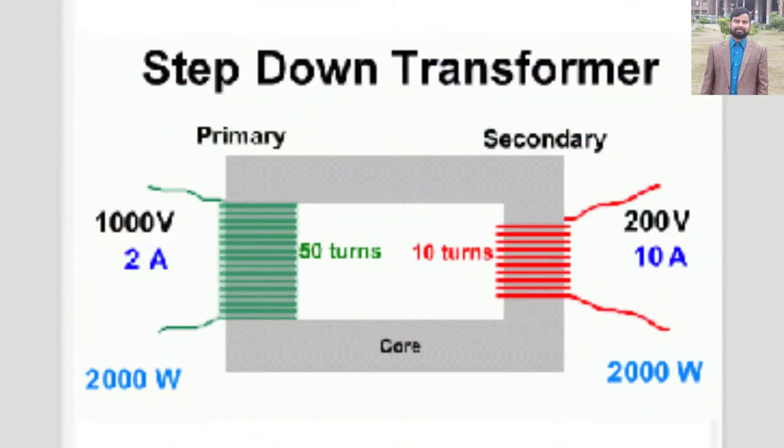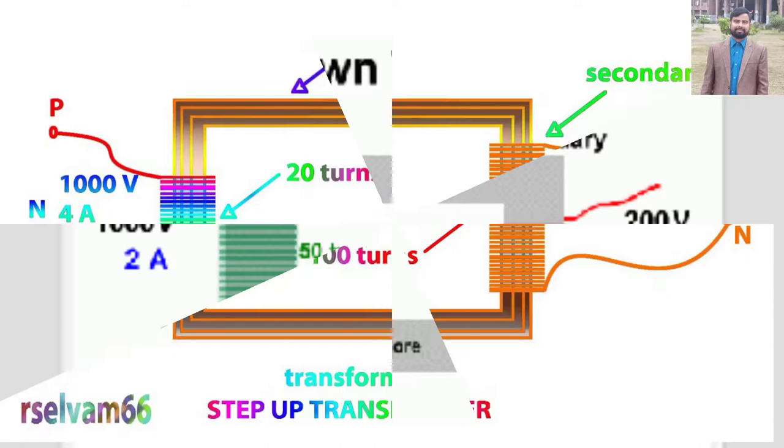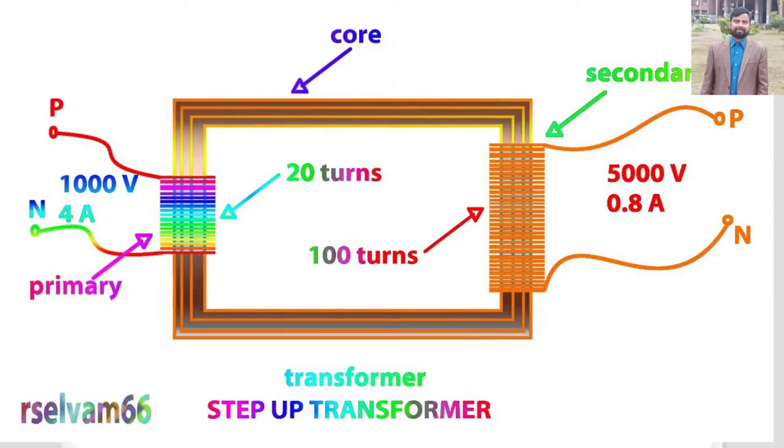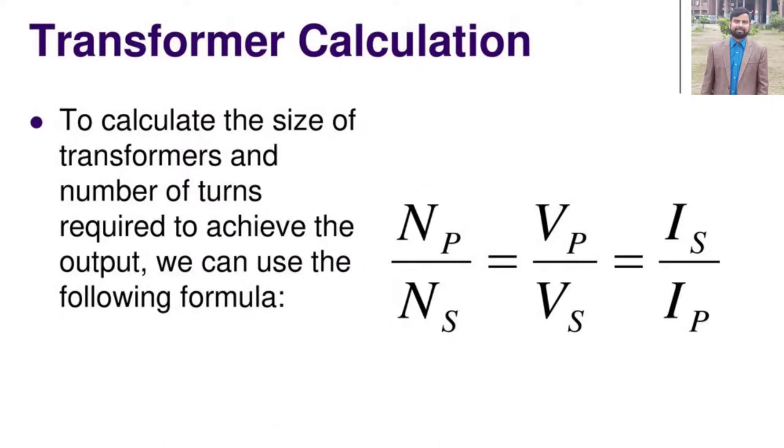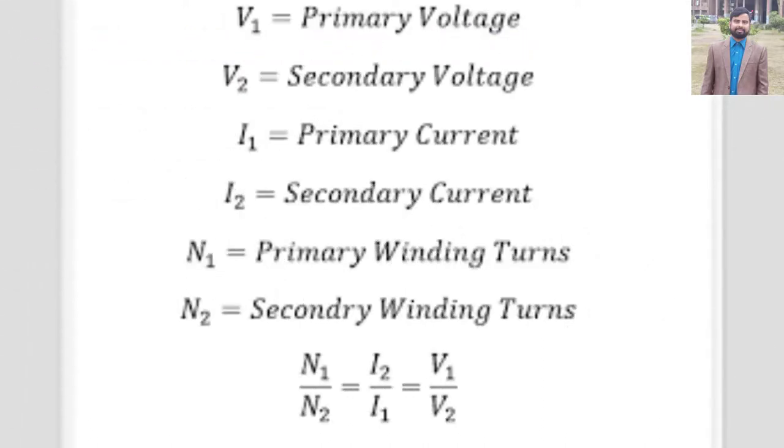Step-down transformers: if the first coil has more turns than the second coil, the secondary voltage is smaller than the primary voltage. This is called a step-down transformer. If the second coil has half as many turns as the first coil, the secondary voltage will be half the size of the primary voltage. If the second coil has one-tenth as many turns, it has one-tenth the voltage. In general, secondary voltage divided by primary voltage equals number of turns in secondary divided by number of turns in the primary. The current is transformed the opposite way, increased in size, in a step-down transformer.